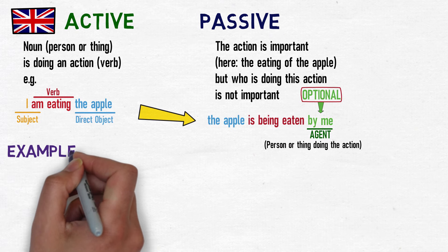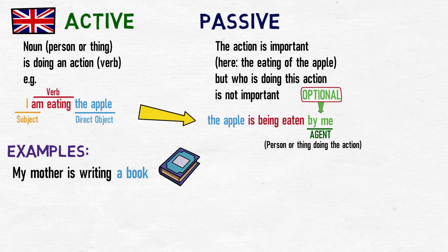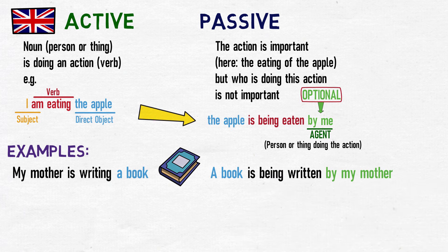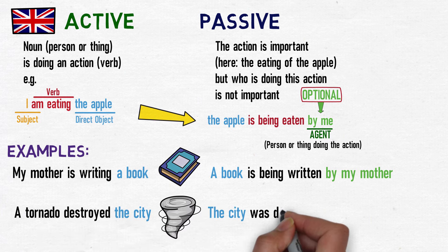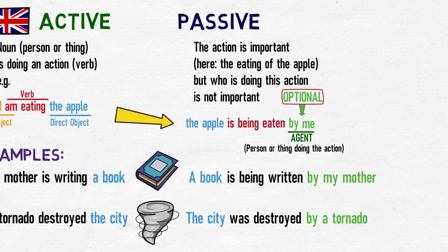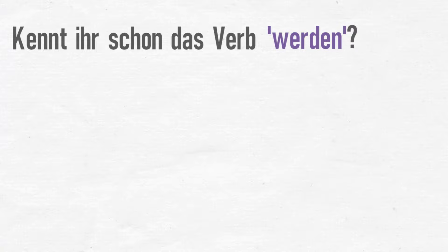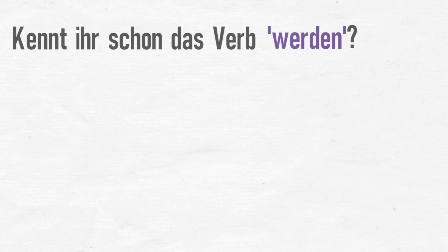Here are some other English examples. To form the passive, there are a few things which we all need to be comfortable with. The first is how the verb 'werden' conjugates. I covered this in my Forming the Future Tense video, so if you haven't seen that yet or require a recap, please click the banner now. The forms of werden are shown here.